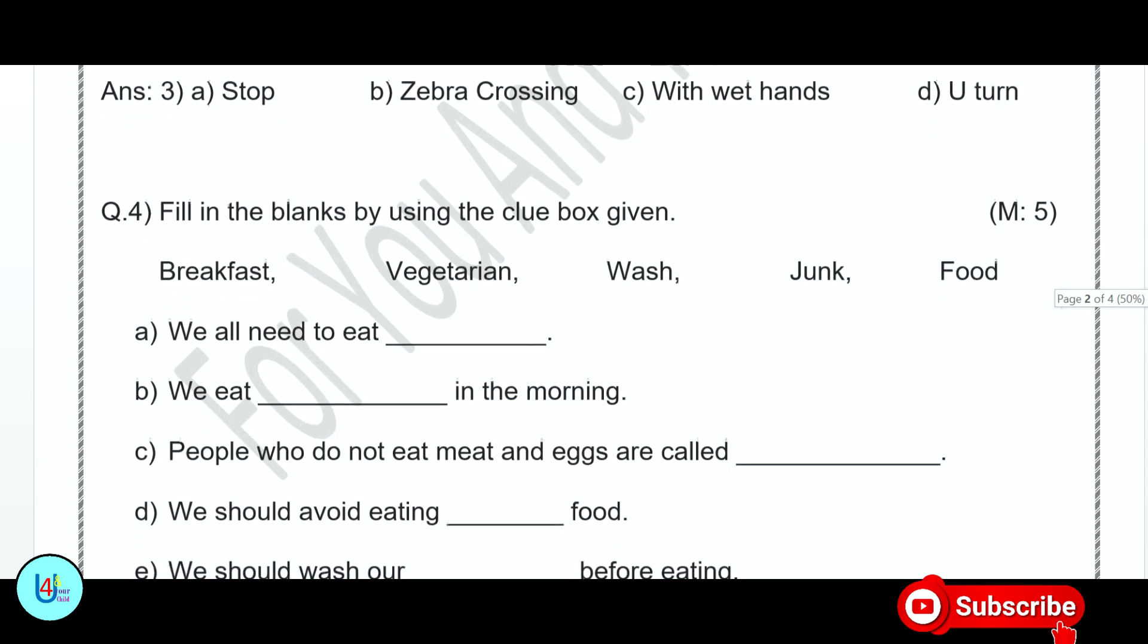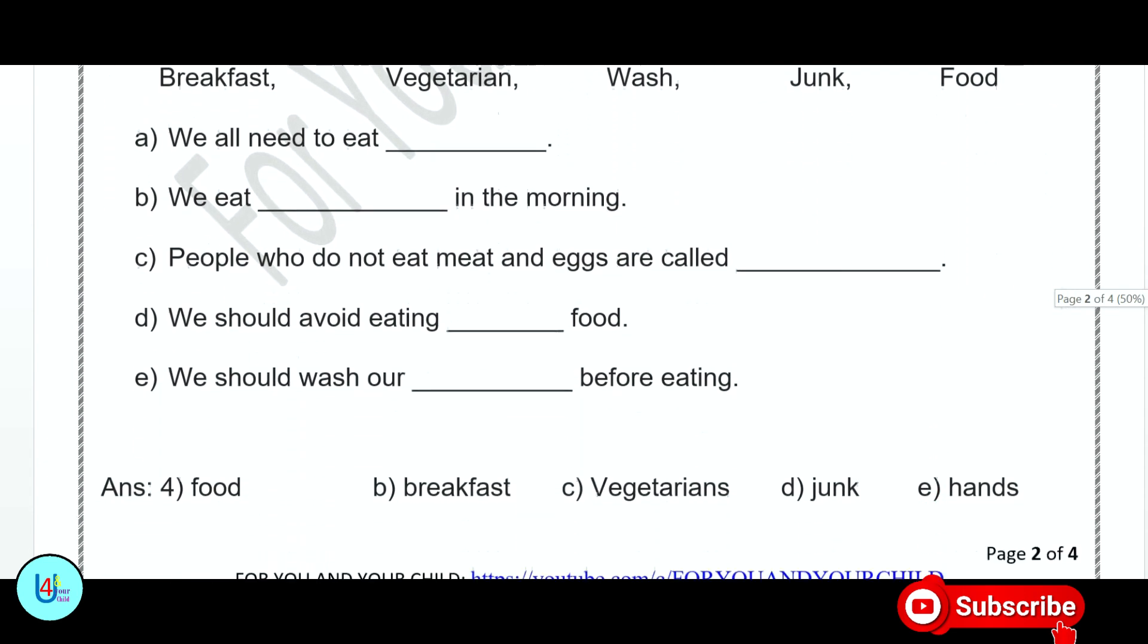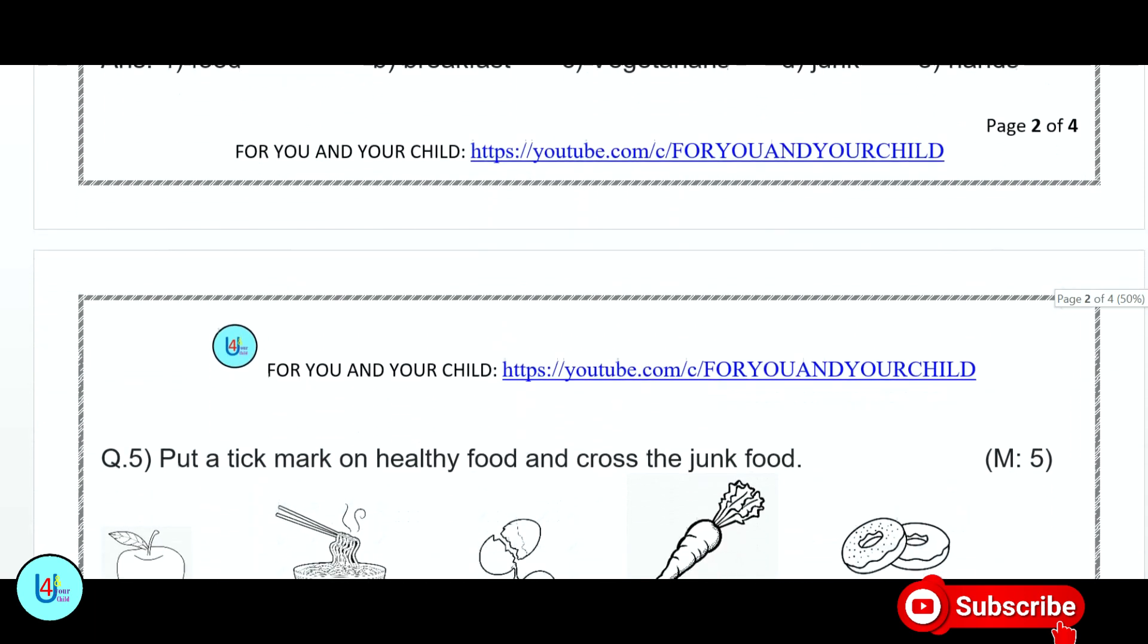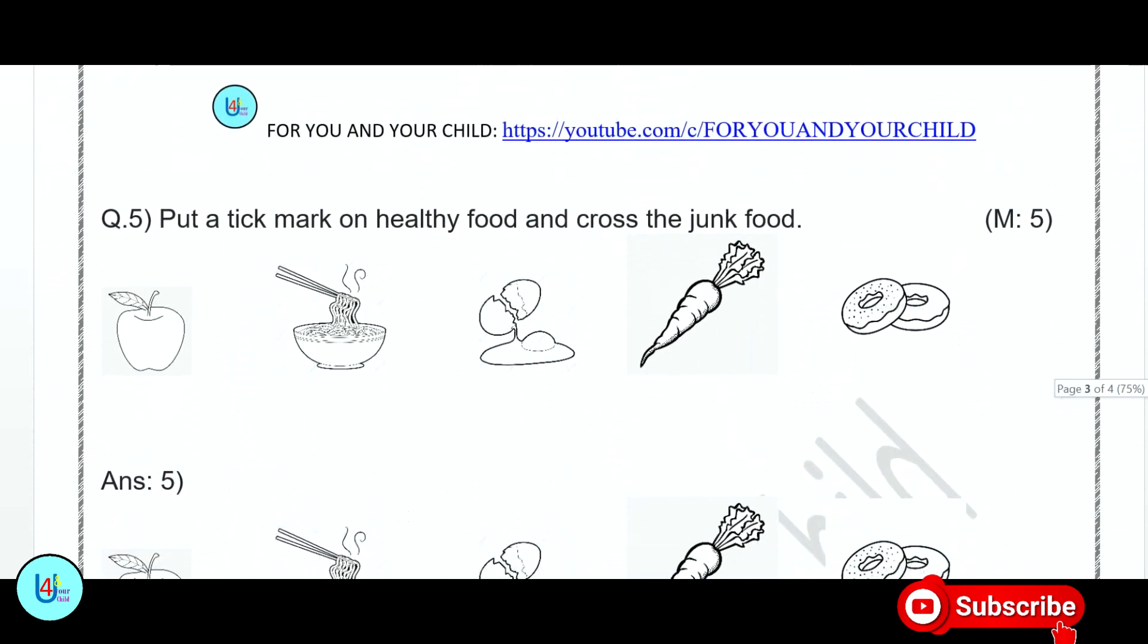People who do not eat meat and eggs are called vegetarian. We should avoid eating junk food. We should wash our hands before eating. Question number 5: Put a tick mark on healthy food and cross the junk food. Different food items - which is junk food and which is healthy food. You have to recognize it. You have to tick on healthy food and cross on junk food. You can see the answer on the screen.